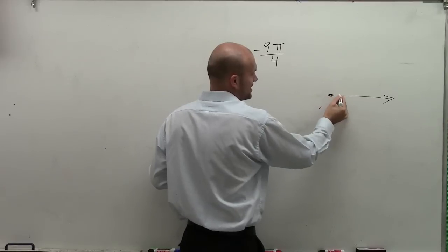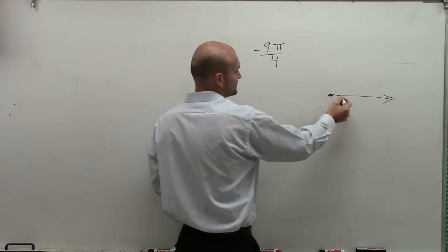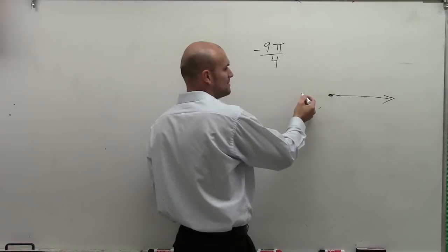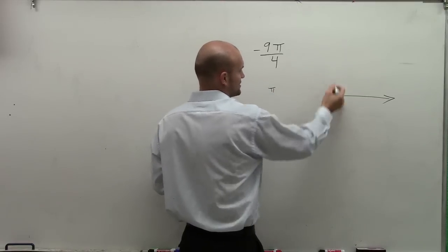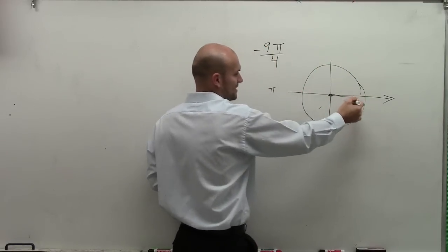So I have my initial side, right? Well, remember, in a circle, when I go halfway around, that would be pi. Let's actually, OK. So here's my initial side.